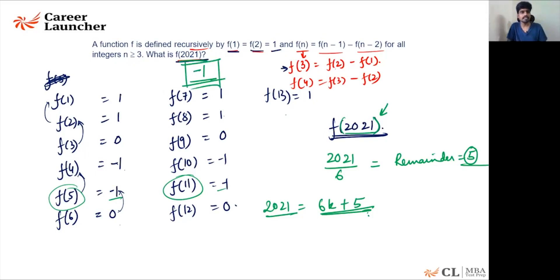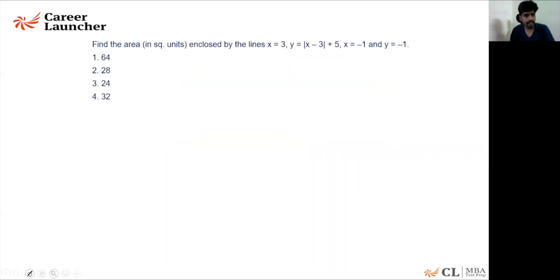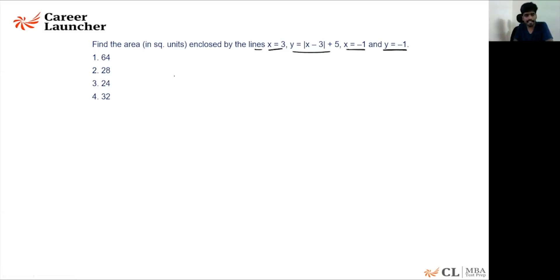This is how these kinds of questions are typically solved — only by observing the pattern. Let's look at question 66: find the area in square units enclosed by the lines x = 3, x = -1, y = -1, and y = |x - 3| + 5. First of all, draw the coordinate axis — if you draw the graph correctly, you will get the answer correctly.